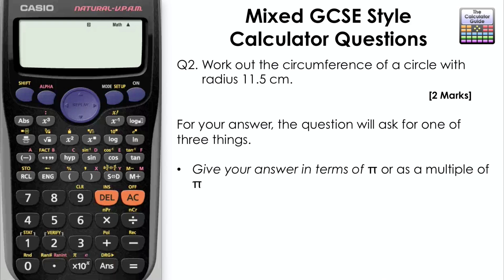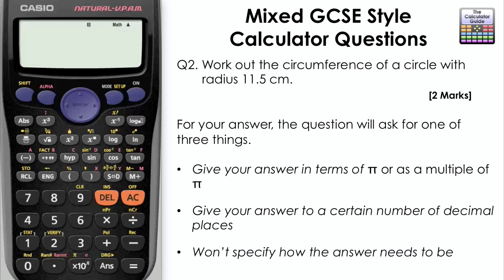For your answer, the question will ask for one of three things. Give your answer in terms of pi, sometimes phrased as a multiple of pi. Give your answer to a certain number of decimal places, typically 1, 2, or perhaps 3, or they won't specify how the answer needs to be.